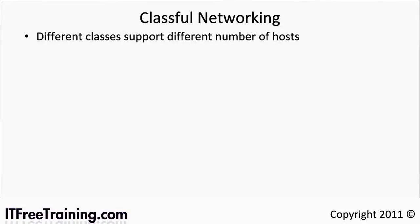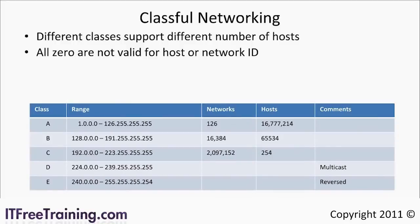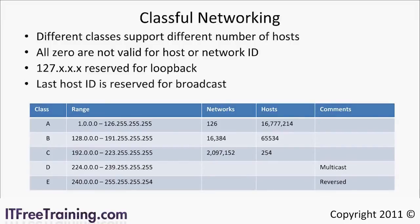The first class, class A, supports 16,777,214 hosts and is available in 126 networks. The network and host ID cannot be all zeros. The 127 network is reserved for loopback — if you ping any address in the 127 network you are pinging your local computer. This is useful for testing. The last host ID, or a host ID with all ones, is reserved for broadcast.